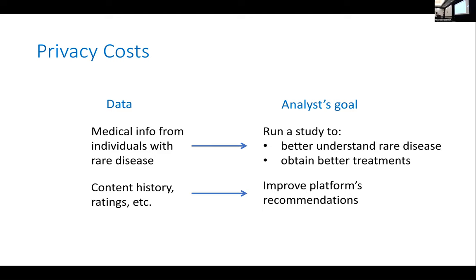Maybe I'm an analyst trying to run a medical study to understand a rare disease better and obtain better treatments. I'm going to use medical information about individuals who have this rare disease and participate in the study. This is very sensitive data — just knowing that a person participated in the study reveals a lot about them, likely that they actually have the rare disease. Similarly, if I'm an online platform relying on a recommendation system, I'm going to train it on user data — their content history, their ratings — information that users probably don't want out there.